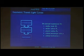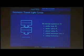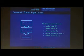We derive expressions for the stellar mass, the stellar radius, the planet radius, the orbital semi-major axis, and the orbital inclination — which is the angle the planet makes to the equatorial plane of the star.